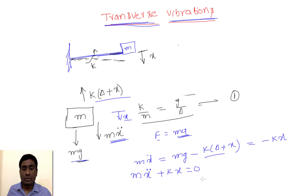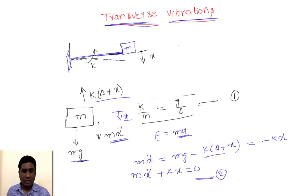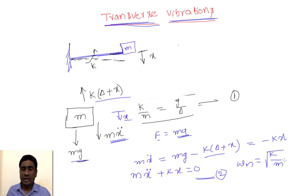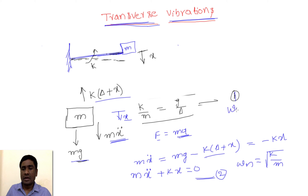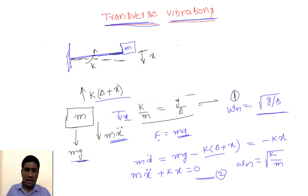Finally we get m·ẍ + k·x = 0. This is exactly the same equation we derived for longitudinal vibrations. The natural frequency ωₙ = √(k/m), and using the relation k/m = g/δ, we can also write ωₙ = √(g/δ). In most cases it is easier to find δ than k.